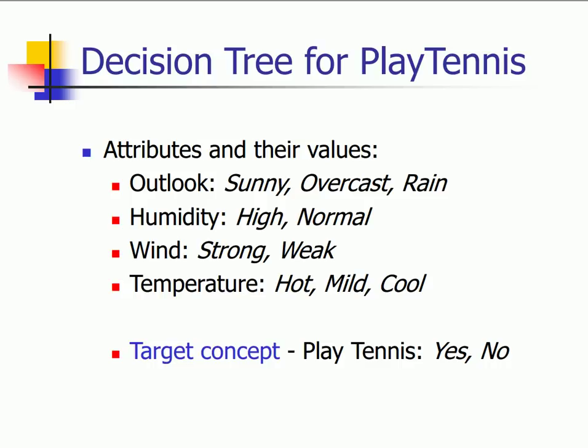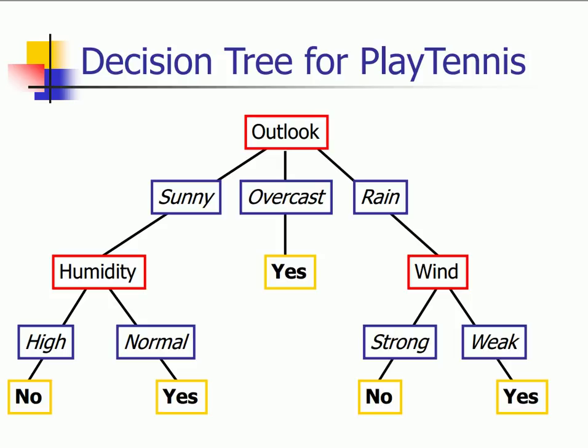As you've already seen, the four attributes are outlook, humidity, wind, and temperature, and my target value is should I play tennis or not. Finally, this is how my decision tree should look like. But have you noticed something? Why is outlook first, and then humidity, and then wind? Why can't I first have humidity, and then outlook, and then wind? There's a reason for that.